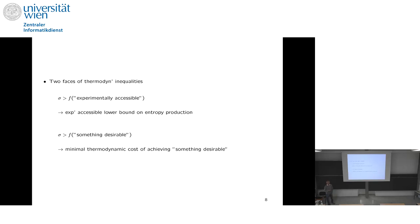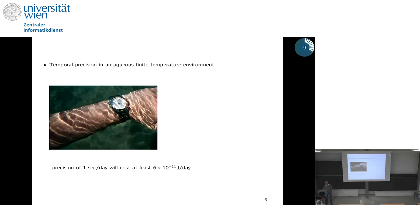What could be desirable? At a conference like this, it would be desirable to have precise clocks. Such a clock at 300 K will not be infinitely precise — there are fluctuations. The question I asked myself was: does a more precise watch need more energy in its operation? Is there a trade-off between precision and thermodynamic cost? One can now prove that a clock with a precision of one second per day will cost at least 10^{-11} joules per day. This is the motivation for what I'm going to show.